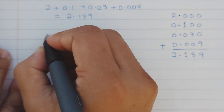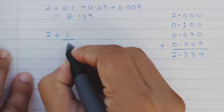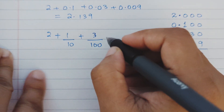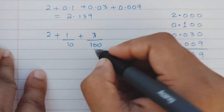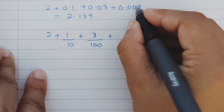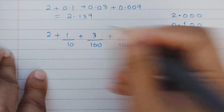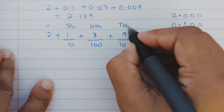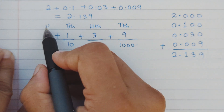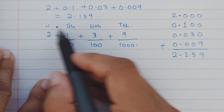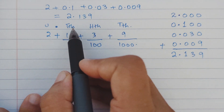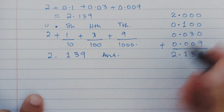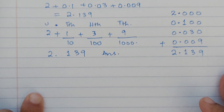The second method is to write them in fraction form: 0.1 is one tenth, 0.03 is three hundredths, and 0.009 is nine thousandths. One decimal place means tenths, two means hundredths, three means thousandths. Arranging in sequence — units, tenths, hundredths, thousandths — the number is 2.139.